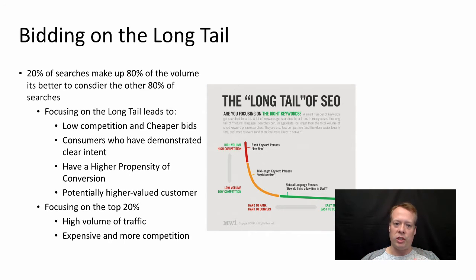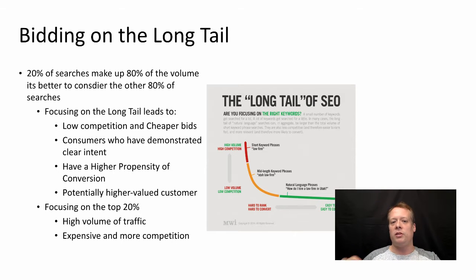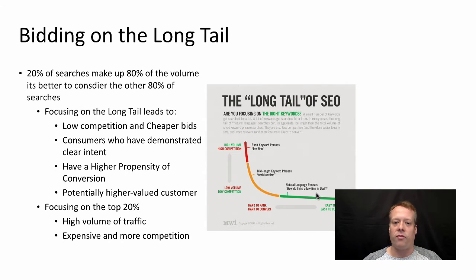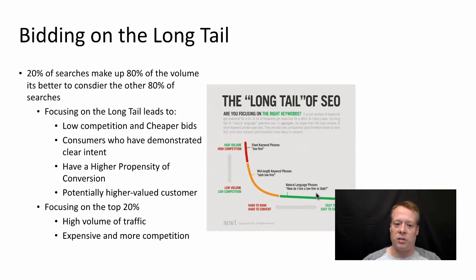20% of searches make up about 80% of the value, but it's much more in your interest to consider the other 80% of searches. If you can pick and choose a bunch of those other searches, you can actually add up to more than what's in that top 20%. Focusing on the long tail leads to low competition — fewer people are competing. Consumers have a demonstrated clear intent, a higher propensity to convert. If they're just Googling 'law firm' in general, they're not going to convert as likely as 'how do I hire a law firm in Utah.' They're potentially someone looking for exactly what you have to offer and more willing to spend the money.